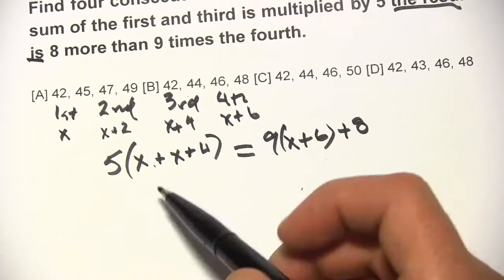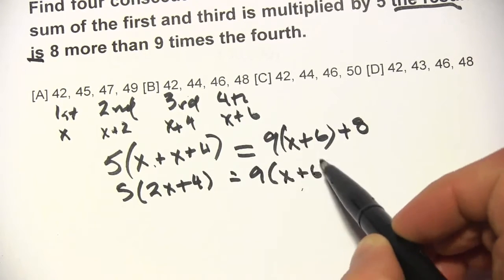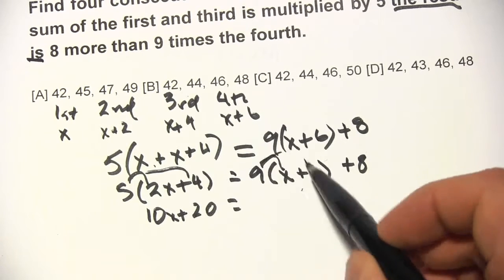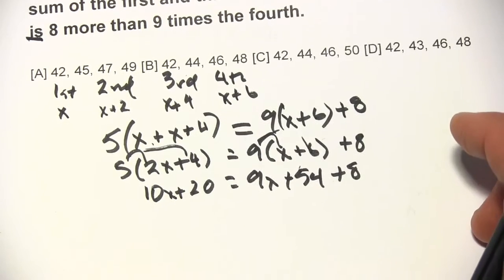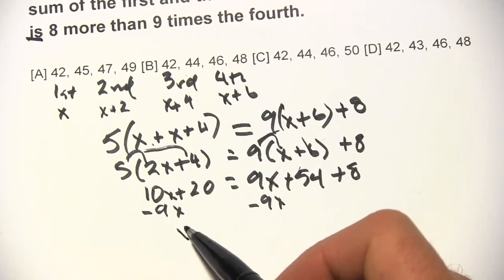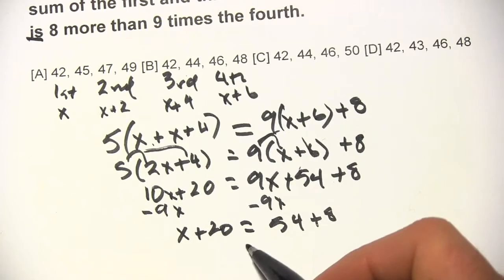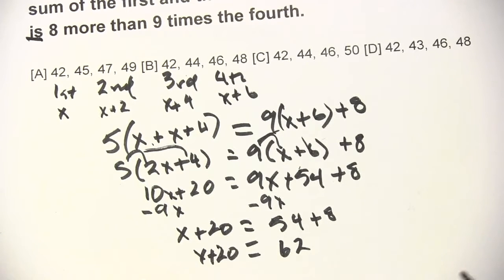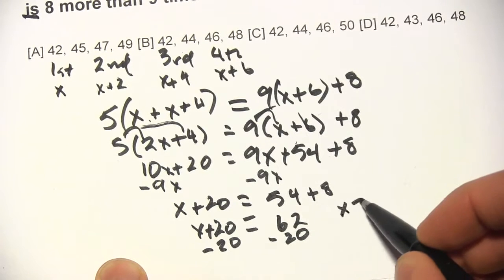Let's solve for x. x plus x is 2x, so we have 5 times 2x plus 4 equals 9 times x plus 6, plus 8. Distributing the 5: 5 times 2x is 10x, 5 times 4 is 20. Distributing the 9: 9 times x is 9x, 9 times 6 is 54, plus 8. We have x's on both sides, so we subtract 9x from both sides, leaving x plus 20 equals 62. Subtracting 20 from both sides gives x equals 42.